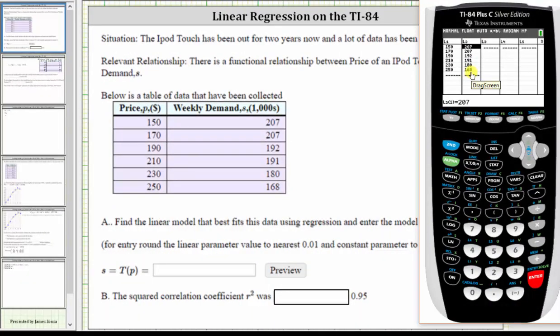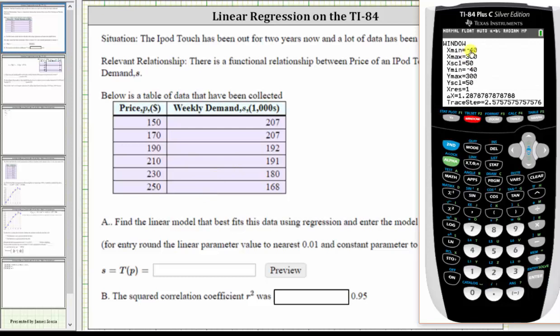This problem doesn't ask us for the scatter plot, but let's go ahead and graph it. The first step is to adjust the window so these values will show on the coordinate plane. And because it's also nice to have the origin show, if we press the window key, notice how I scaled the x-axis, which is really the p-axis, from negative 40 to 300 by 50s, because the maximum price P is 250.